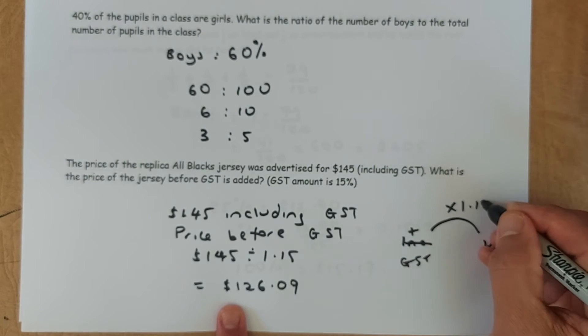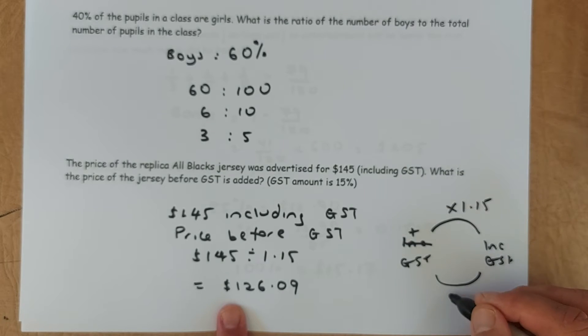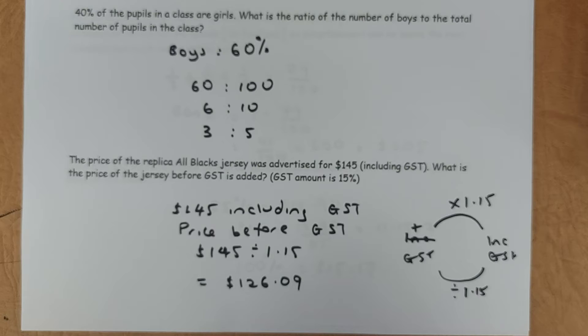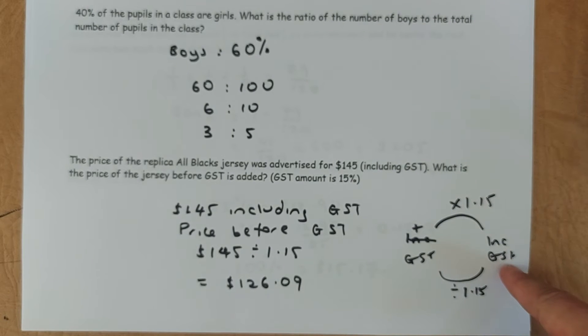If you are from here to here, you multiply by 1.15. If you include GST, you want to find before GST, you divide by 1.15. So now we are on this side, $145. And you want to find the price before GST. So $145 divided by 1.15 and the answer is $126.09.